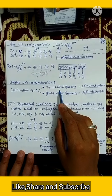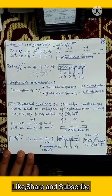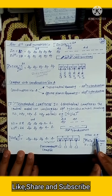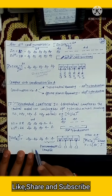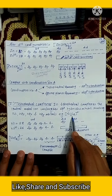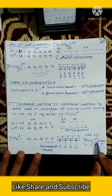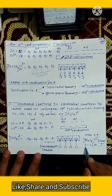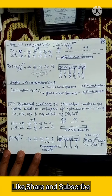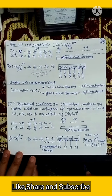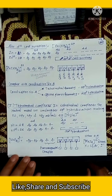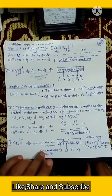The hybridization is sp3, and that is why the geometry is tetrahedral. Other examples of this type of complex are MnX4 2-, where X can be bromine, fluorine, or iodine ions.